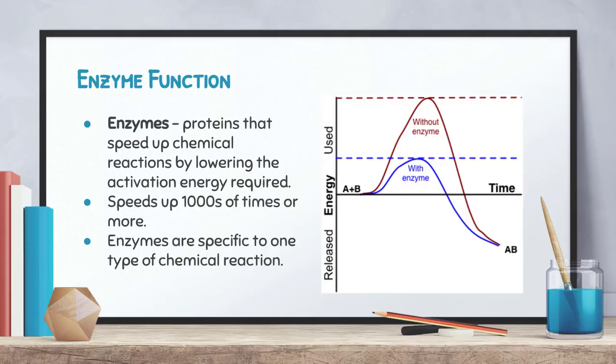This is probably one of the most important slides of the year. Enzymes speed up reactions by lowering the amount of energy required, making them thousands of times faster. Keep in mind that enzymes are specific — one specific type of enzyme will only work for one type of chemical reaction.